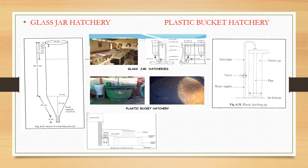The water source must be fresh water — pond water or underground water. The glass jar is cylindrical in shape with a conical bottom, and its capacity is 6.35 liters. Up to 50,000 eggs can be kept in a single jar.